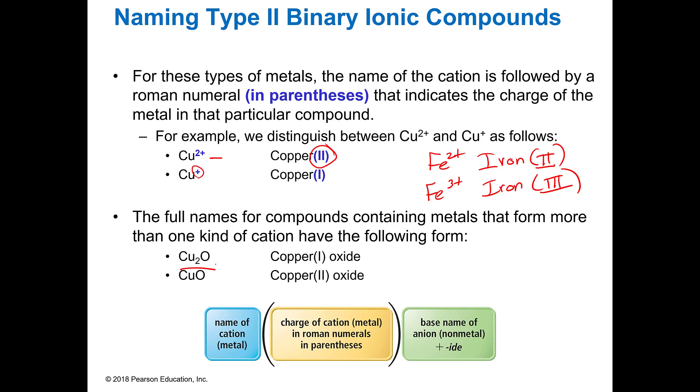So Cu2O would be copper one oxide, remember because minus two and it takes two of these. So that must be a plus one times two. Oxygen is always a minus two. It only takes one to be a two, therefore its charge is two.